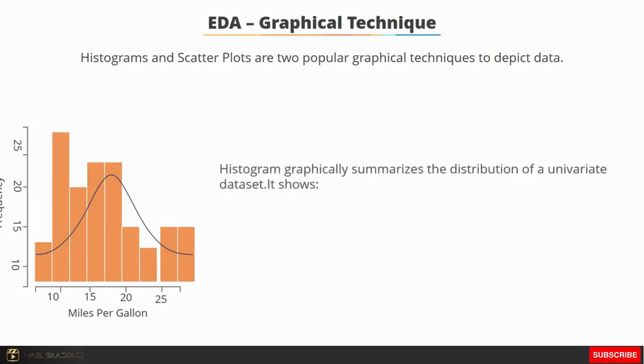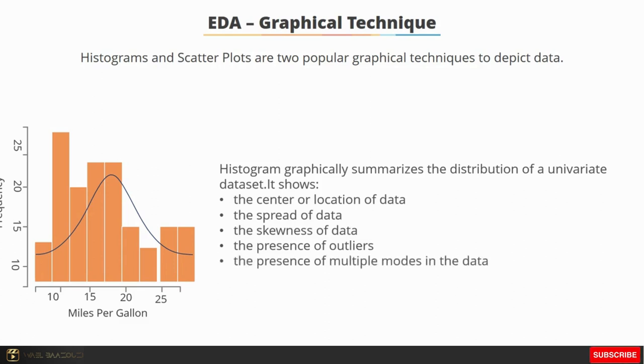The purpose of a histogram, or bins, is to graphically summarize the distribution of a univariate data set. It shows the center or location of data, the spread or scale of data, the skewness of data, the presence of outliers, and the presence of multiple modes in the data.